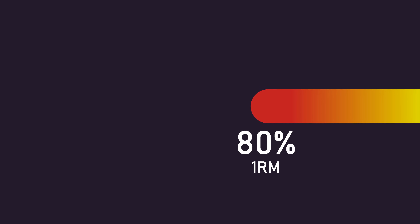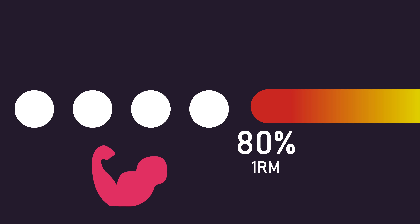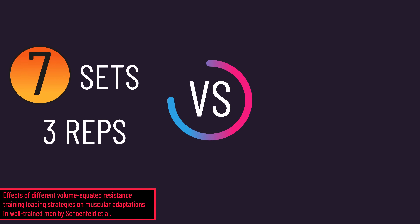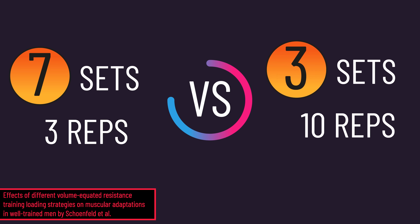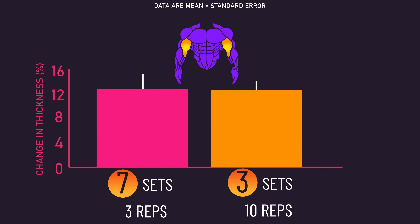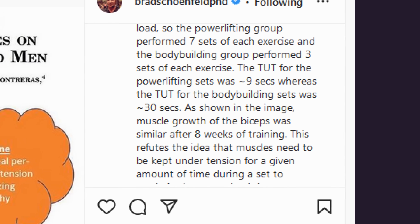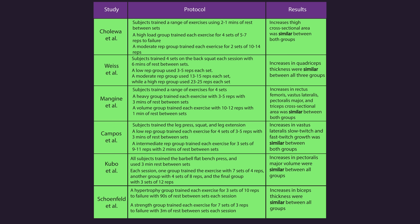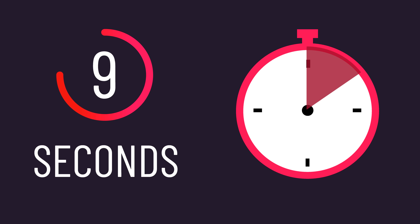Some research indicates loads heavier than 80% 1 rep max may also evoke substantial hypertrophy, though most studies had subjects add extra sets with these heavier loads. For example, Schoenfeld and colleagues compared 7 sets of 3 reps to 3 sets of 10 reps — both close to failure — and hypertrophy was similar. The author noted the 7-sets-of-3 group attained around just 9 seconds of time under tension per set. Thus, we have evidence that time under tension values as low as 9 seconds can be substantially effective for hypertrophy, provided overall training volume is sufficient.